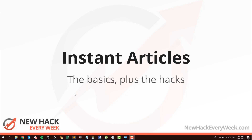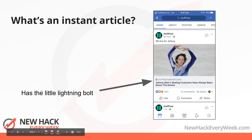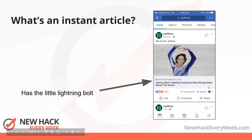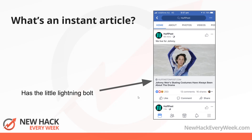I'm going to walk you through the basics plus the hacks, and I'm going to start with what is an Instant Article. Instant Articles are on Facebook, they're only on mobile, and wherever you see this little lightning bolt just here next to the name of the website — these can be ads or they can be organic posts. It works for both of them.